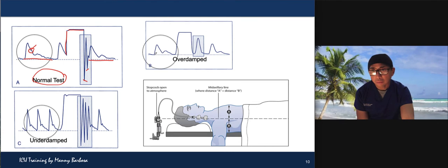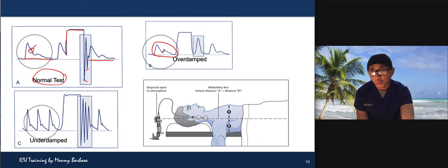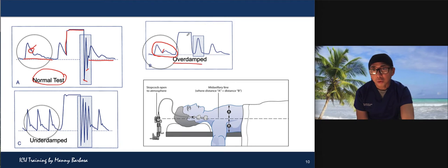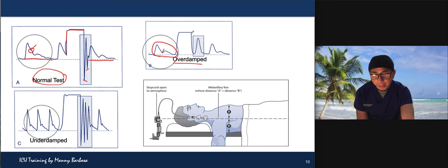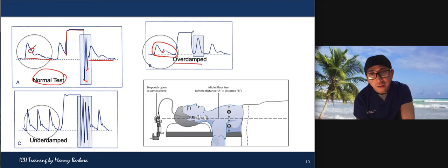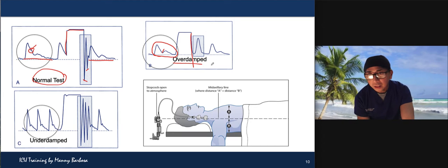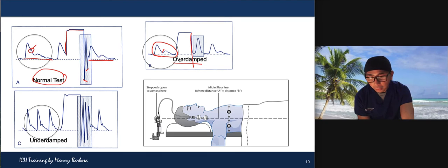The dicrotic notch on your arterial waveform is normal — you get an upstroke, a flat line, then a release below the baseline with one to two oscillations. Now look at the overdamped waveform: the dicrotic notch is too low, and you do not have the expected downstroke going below the baseline. There is no oscillation as there should be — so this is your overdamped system.